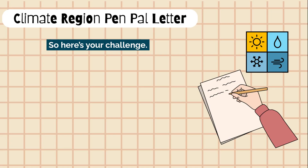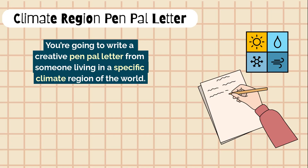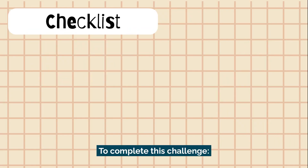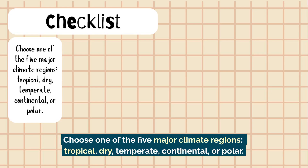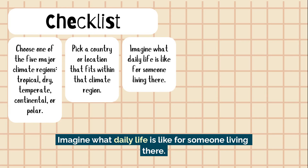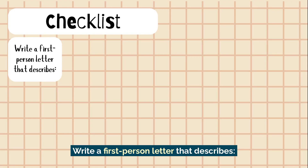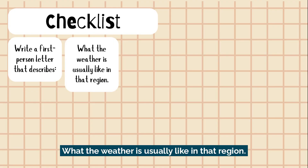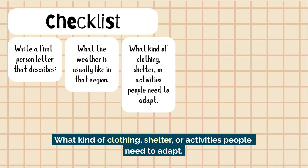So here's your challenge. You're going to write a creative pen-pal letter from someone living in a specific climate region of the world. Choose one of the five major climate regions: tropical, dry, temperate, continental, or polar. Pick a country or location that fits within that climate region, and imagine what daily life is like for someone living there. Write a first-person letter that describes what the weather is usually like in that region, and what kind of clothing, shelter, or activities people need to adapt.